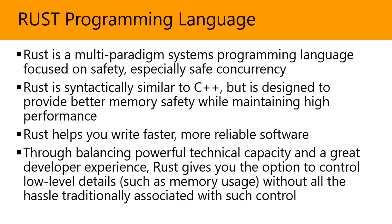The Rust programming language is a multi-paradigm systems programming language focused primarily on safety, especially safe concurrency. Think of it as an alternative to C++. Rust is syntactically similar to C++, but it's designed to provide better memory safety while maintaining high performance.